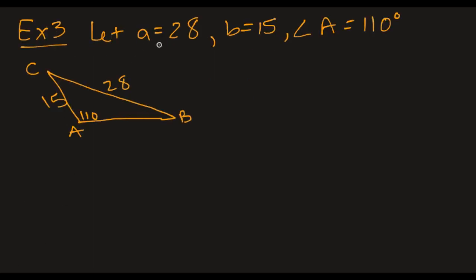Okay, so we let little a equal 28, little b equal 15, and angle A is 110 degrees. So I've drawn a reasonable looking triangle for this case. Now, how are we going to go about solving it? Well, the points that we know, we have the combination of the angle measure a and its side, and we have the other side b,